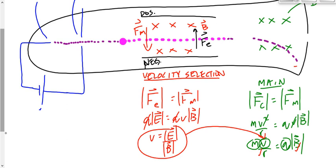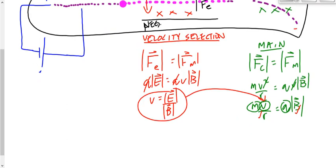So Thomson rearranges this to solve for Q over M: take M down by dividing and B down by dividing, and we get Q/M equals V over BR. He knows V from the velocity selection chamber, he knows B, he knows R. He plugs those numbers in and gets 1.76 times 10 to the 11.